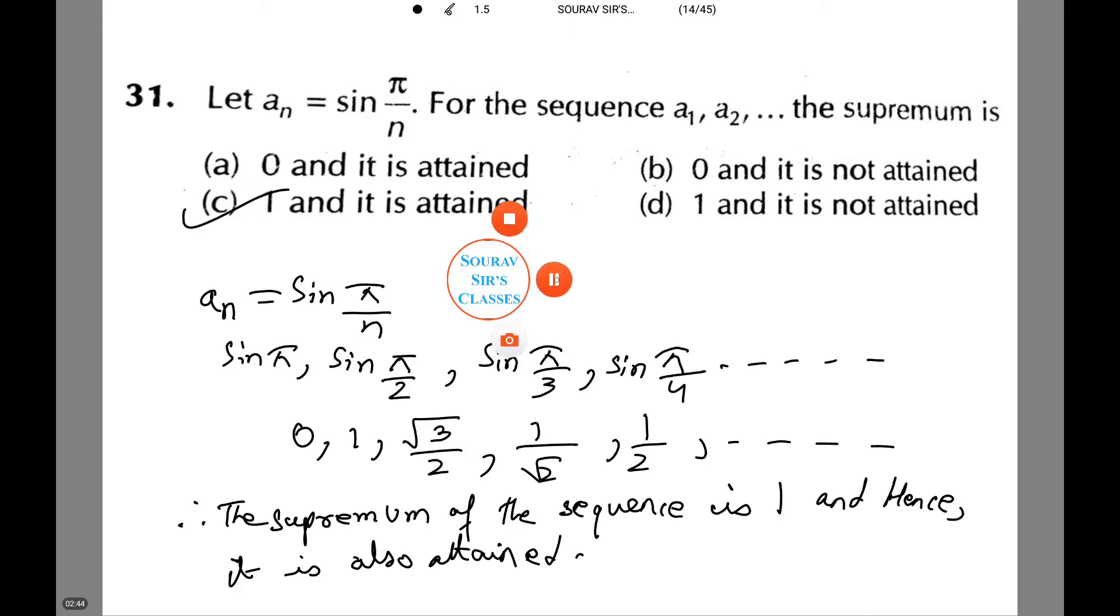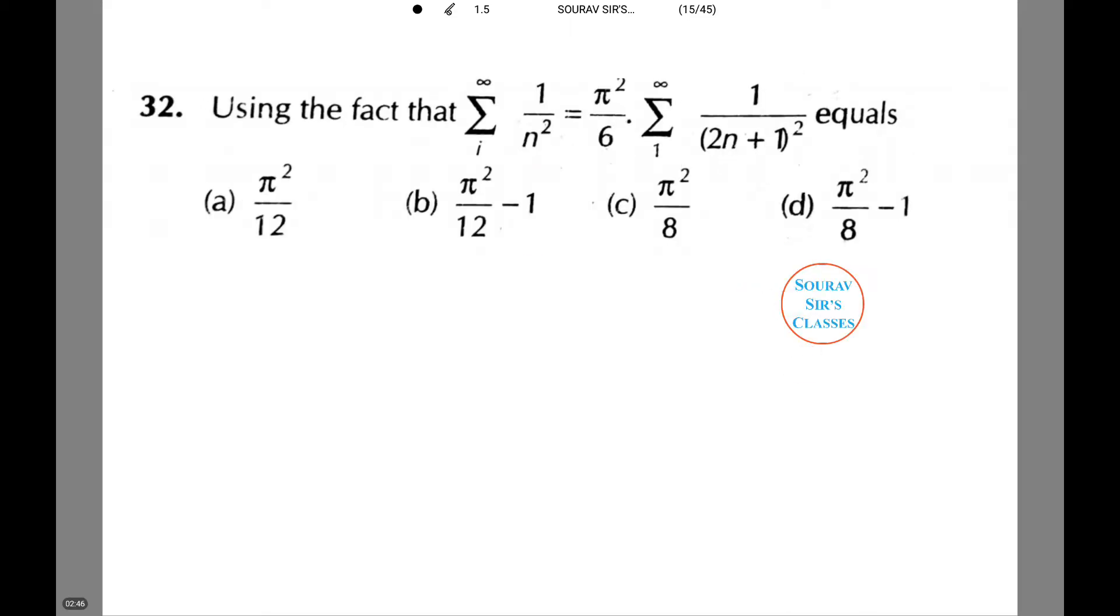Moving on to another question using the fact that Σ(1 to ∞) 1/n² = π²/6. Find Σ(1 to ∞) 1/(2n+1)². I'm doing it in another page since the calculation is going to be a long one.